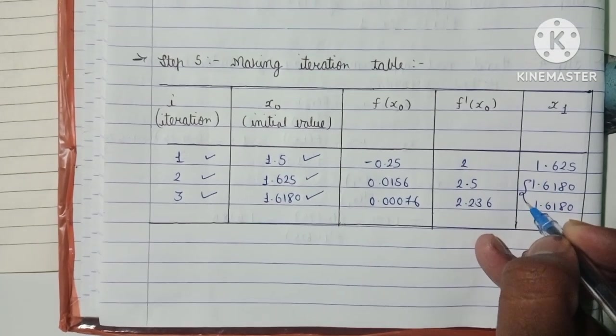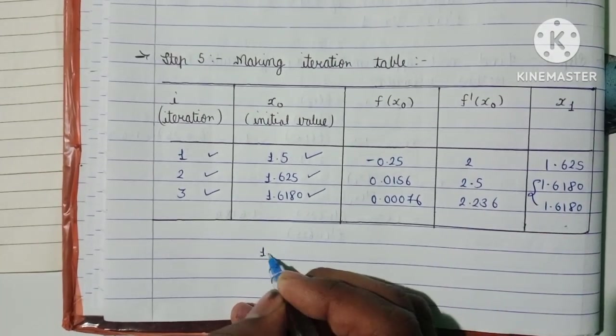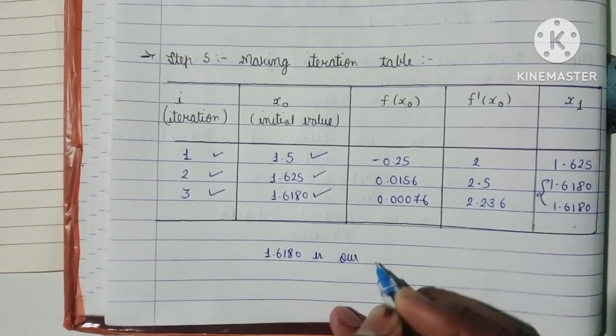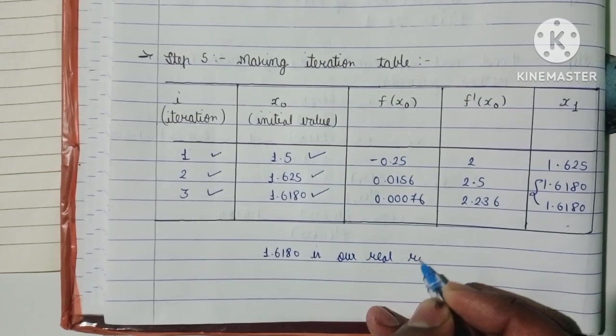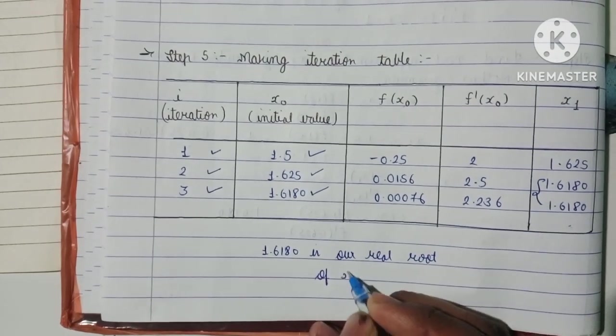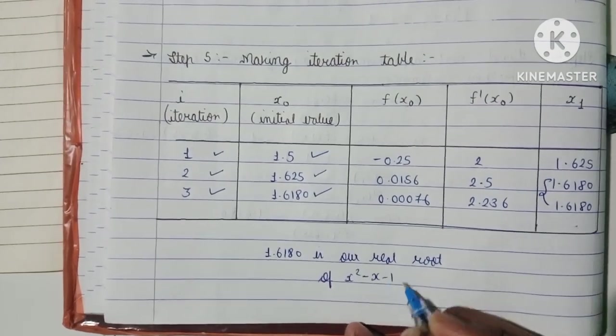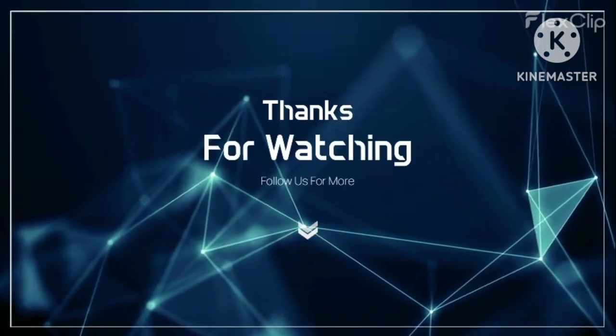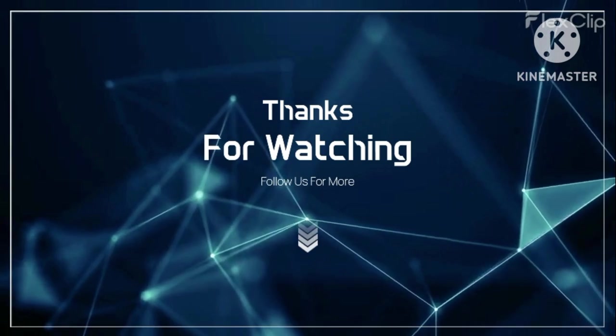The real root of x² - x - 1 = 0 is 1.6180.